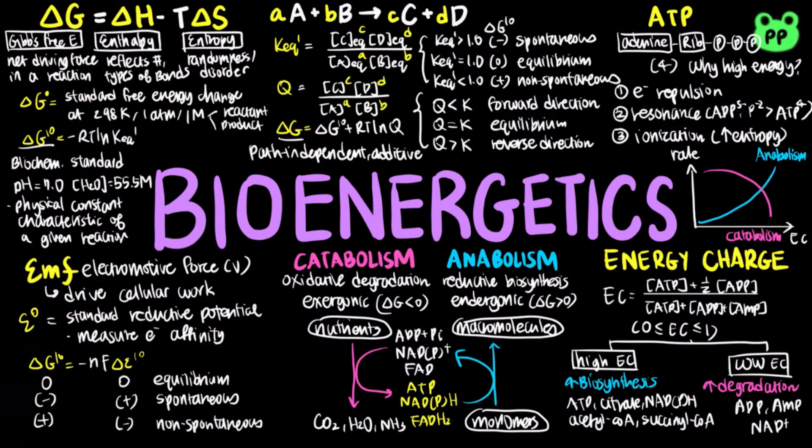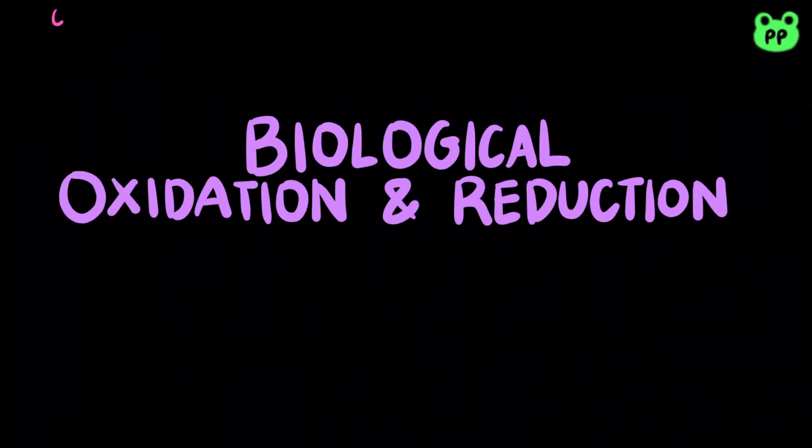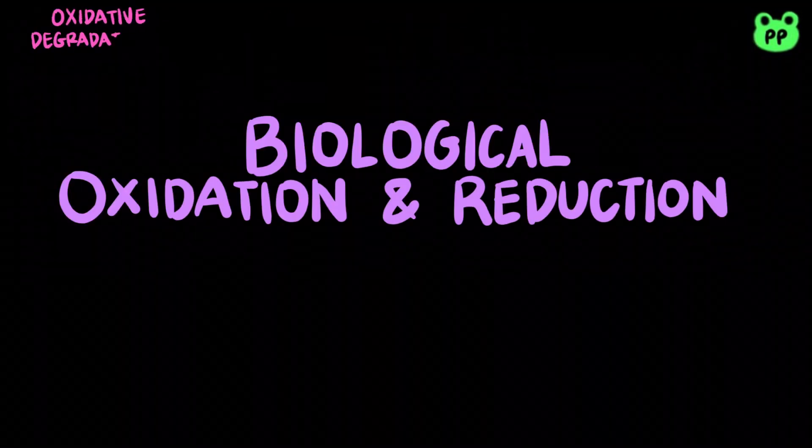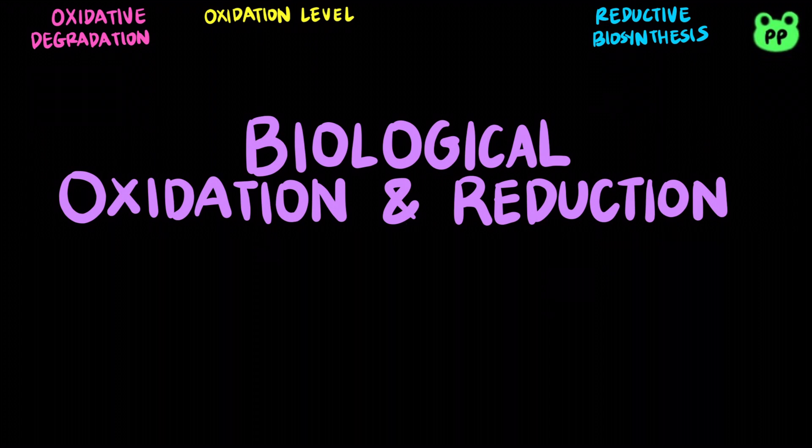In my previous video titled Bioenergetics, I mentioned that spontaneous flow of electrons from a chemical species with lower electron affinity to one with higher electron affinity can generate electromotive force that can be used to drive cellular work. In this video, I'm going to cover oxidative degradation and reductive biosynthesis in terms of oxidation levels of carbon molecules, as well as oxidation-reduction reactions involving oxygen molecules.